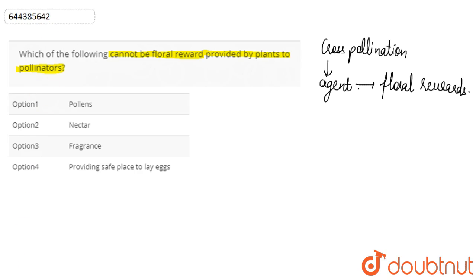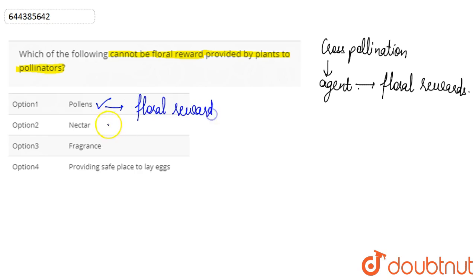Looking at the options: option one is pollen. Yes, pollinating agents receive floral rewards in the form of pollen. Apart from this, they also receive floral rewards in the form of nectar.